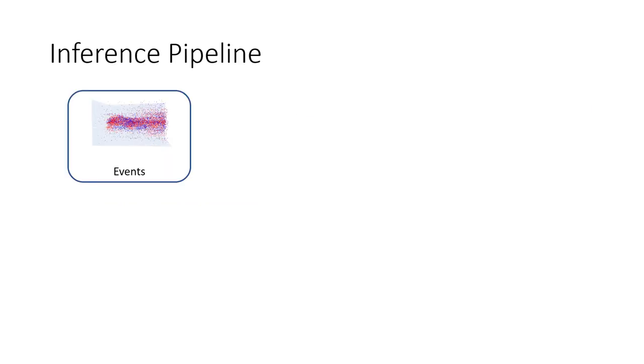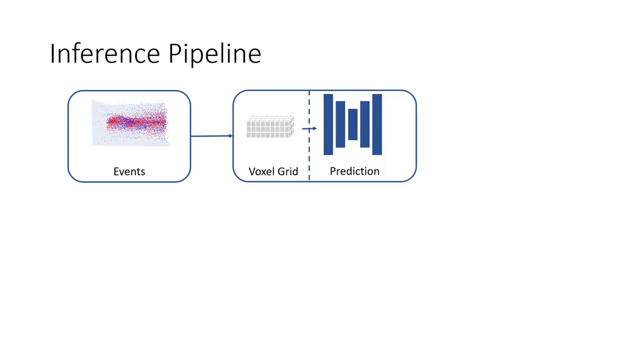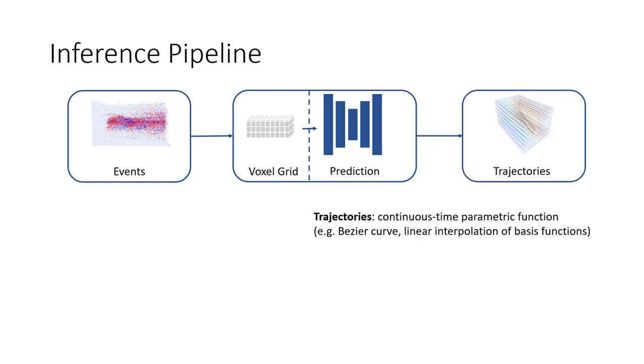A straightforward inference pipeline looks like this. The input are the raw events. In the next steps, events are voxelized and forwarded to the neural network. It predicts pixel level trajectories, represented as continuous time parametric functions.